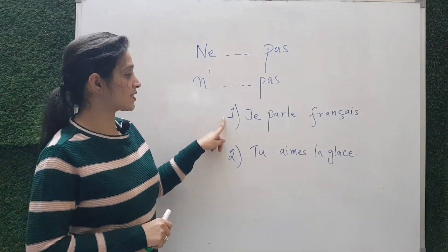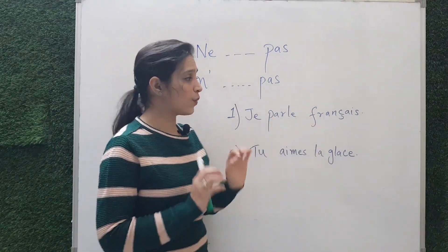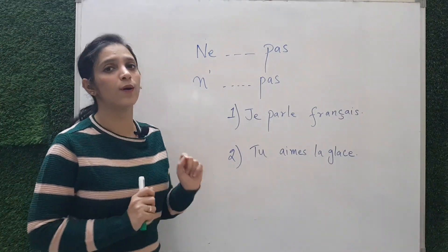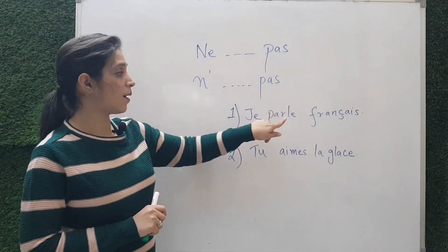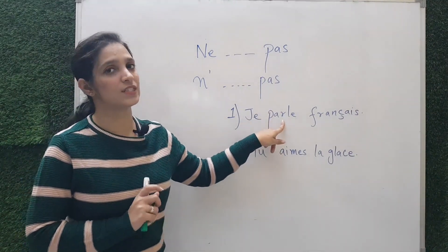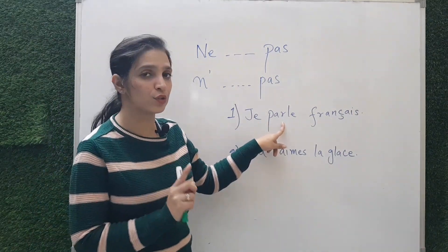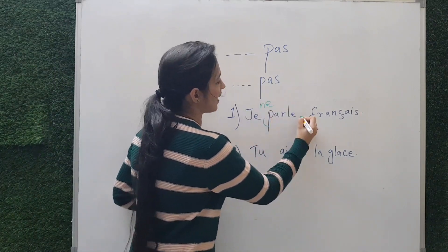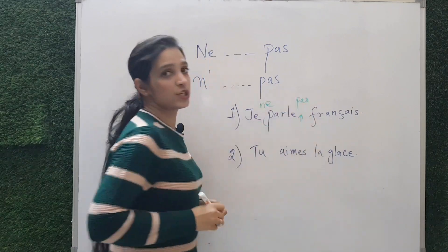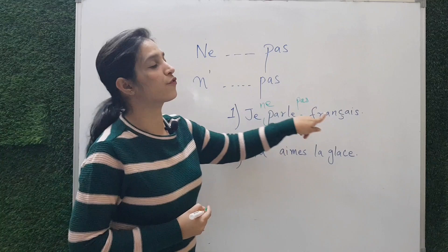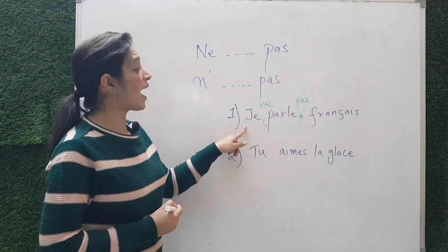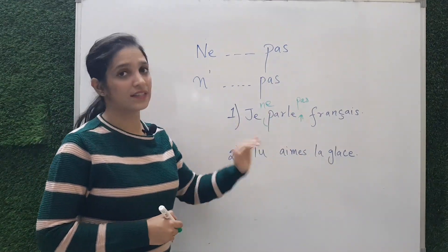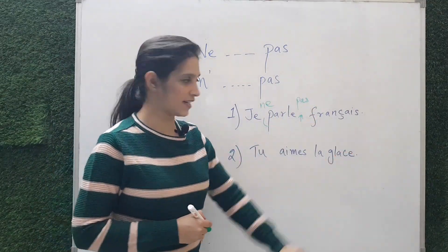Sentence number one: 'Je parle français,' which means 'I speak French.' Step one is to find the verb — it is 'parle,' which means to speak. Now you put 'ne' before the verb and 'pas' after it. So the sentence becomes 'Je ne parle pas français,' meaning 'I don't speak French.'